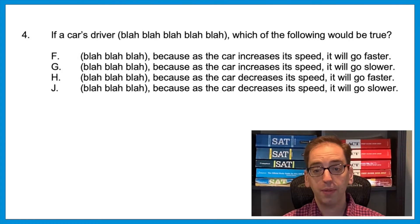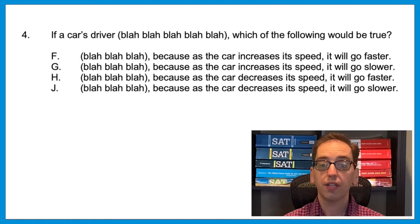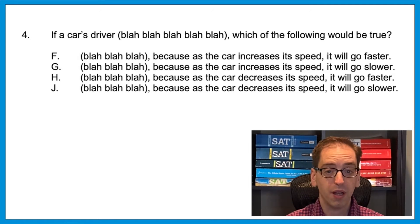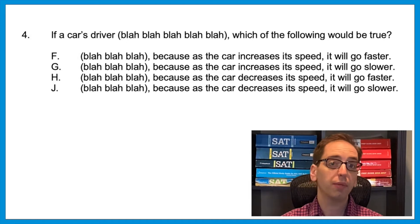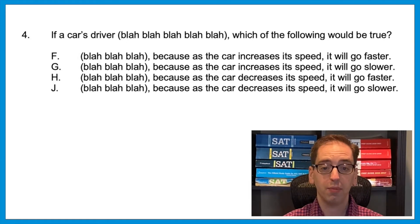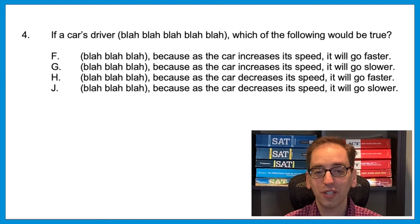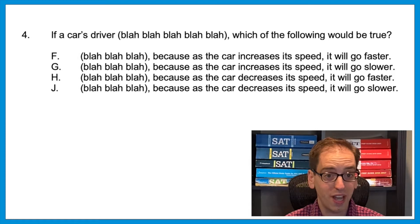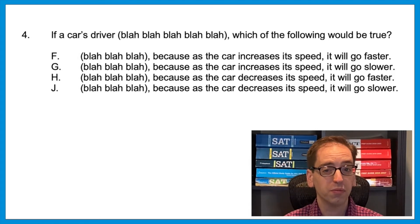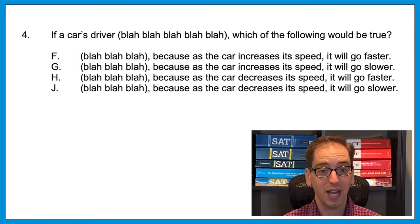This next tip is one that my students really like. For the upcoming question, don't worry about picking a correct answer — it's not possible without showing you a passage. But think about which two answers are kind of silly. Question four: If a car's driver [blah blah blah], which of the following would be true? Option G says as the car increases its speed, it'll go slower — that doesn't make sense. Option H says as the car decreases its speed, it'll go faster — also doesn't make sense. So even without reading the passage, you'd know those two answers are out. It would have to be F or J.